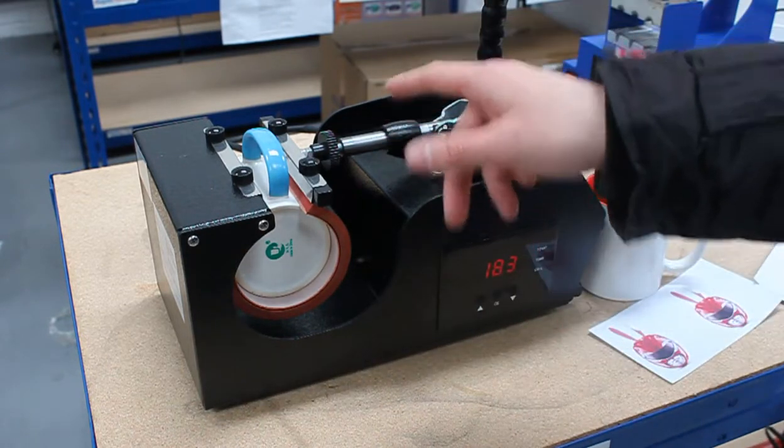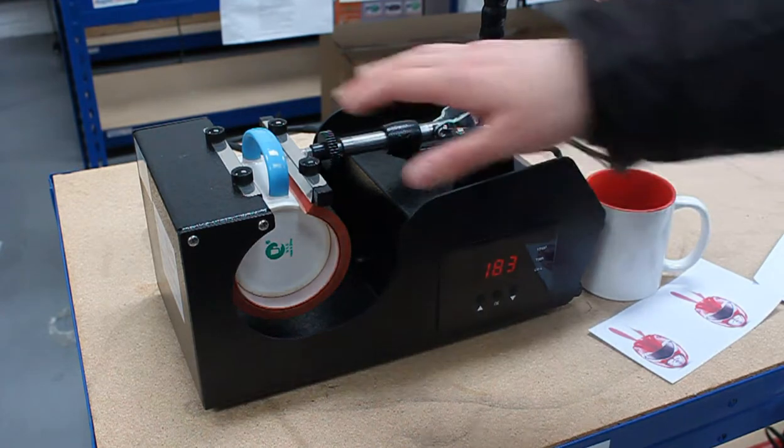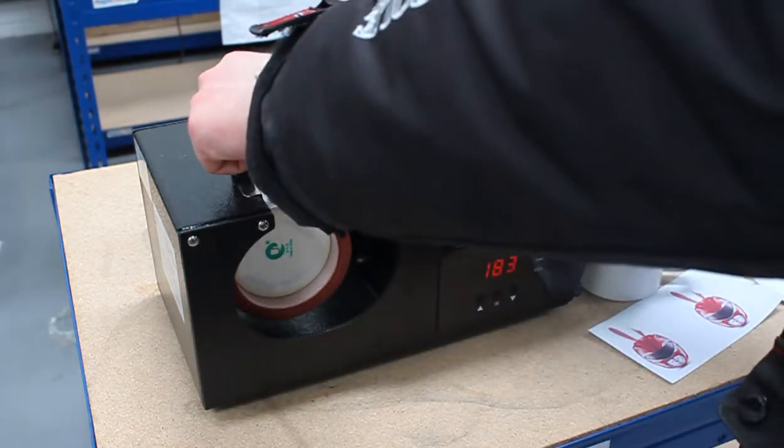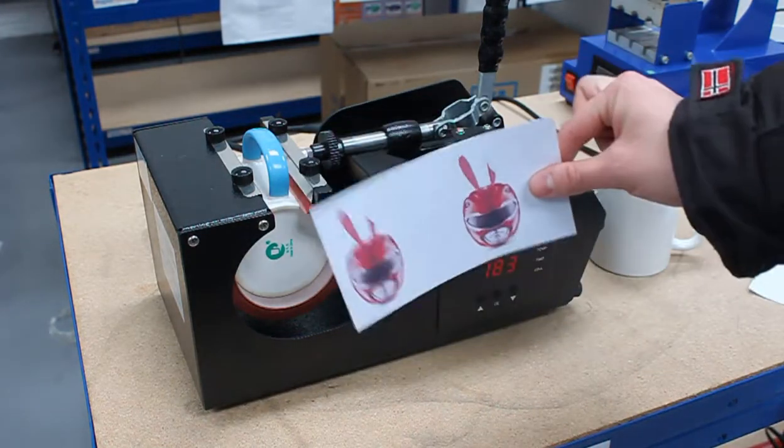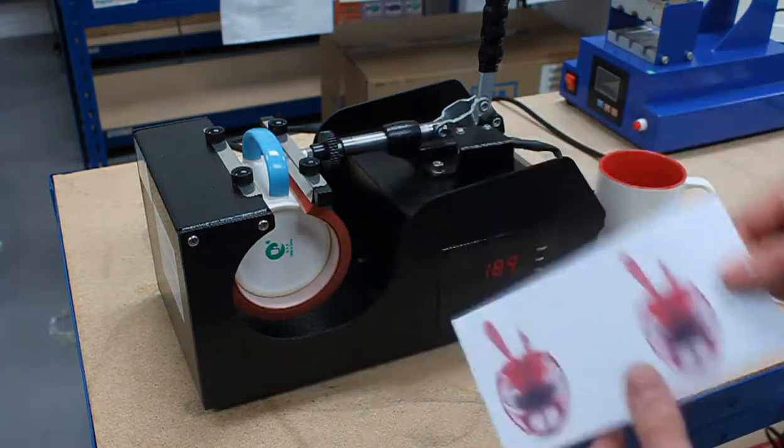Wait for the heat press to heat up. Make sure that you have a blank mug in. Then you can print out your image. Make sure that you mirror it first.